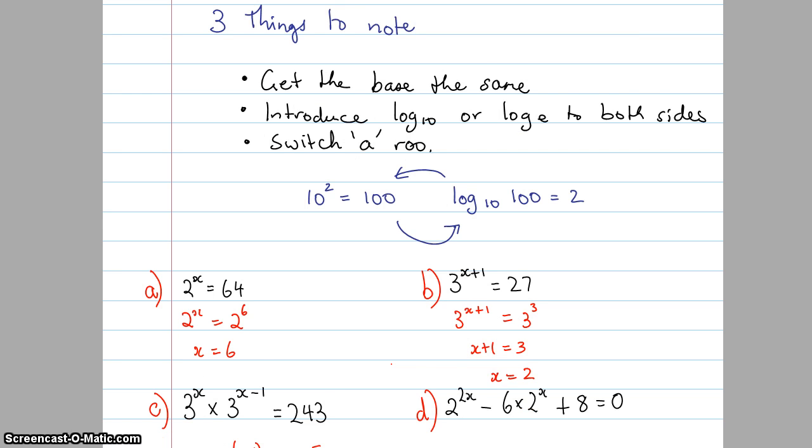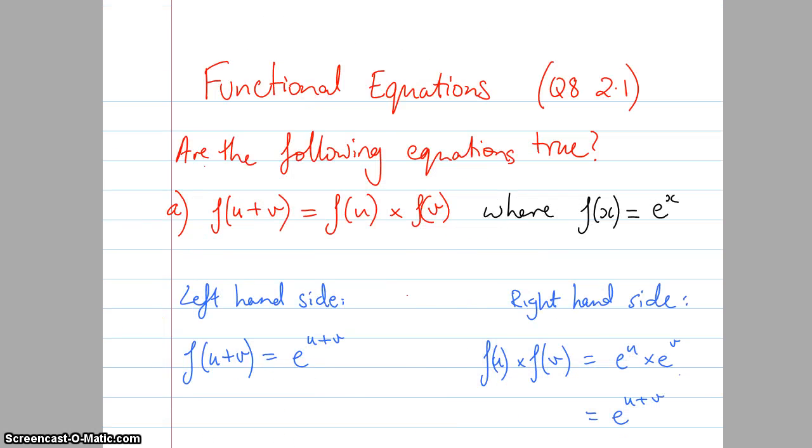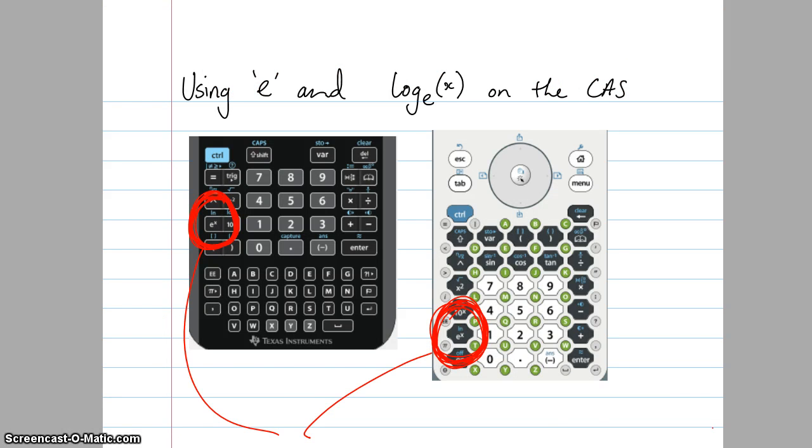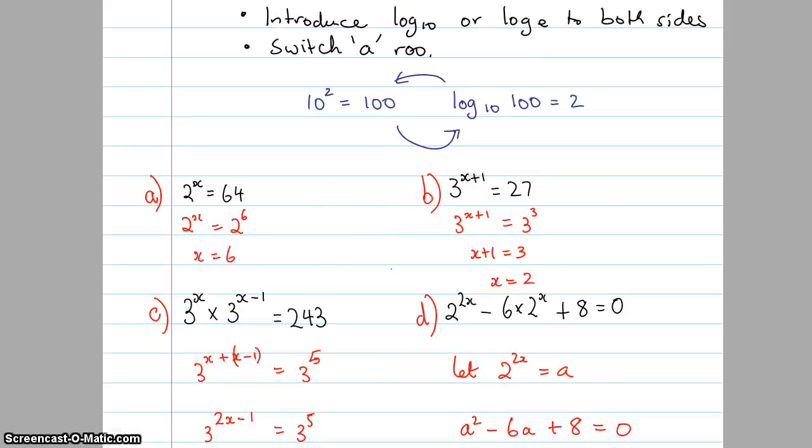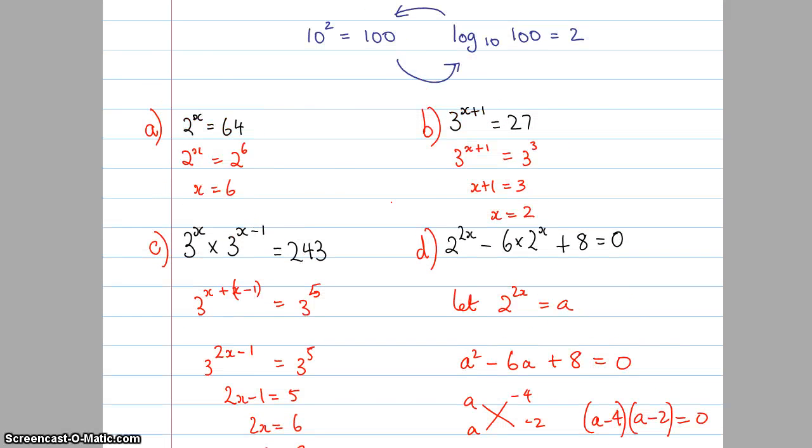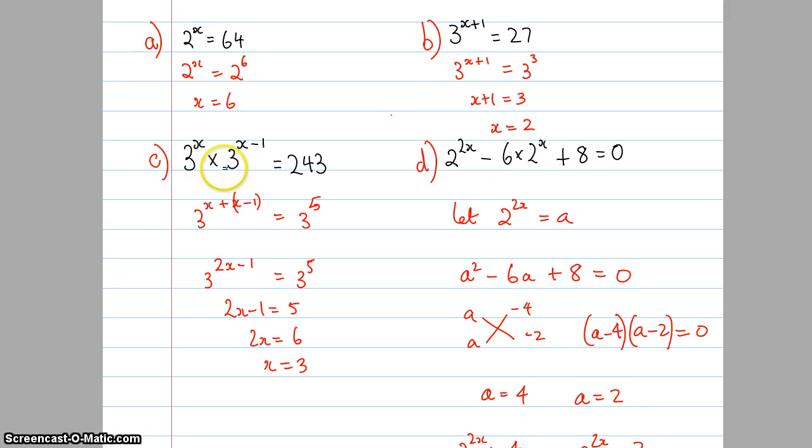The next two might be a little bit trickier. Let's just look at c for the moment. We have 3 to the power of x multiplied by 3 to the power of x minus 1. Now, I'm going to collect both of those together so that it's just one power and one number. So one power on one side, a base with a power on one side and just a number on the other. So that becomes 3 to the power of x. Because we're multiplying them, we can add the powers together, so x plus x minus 1.